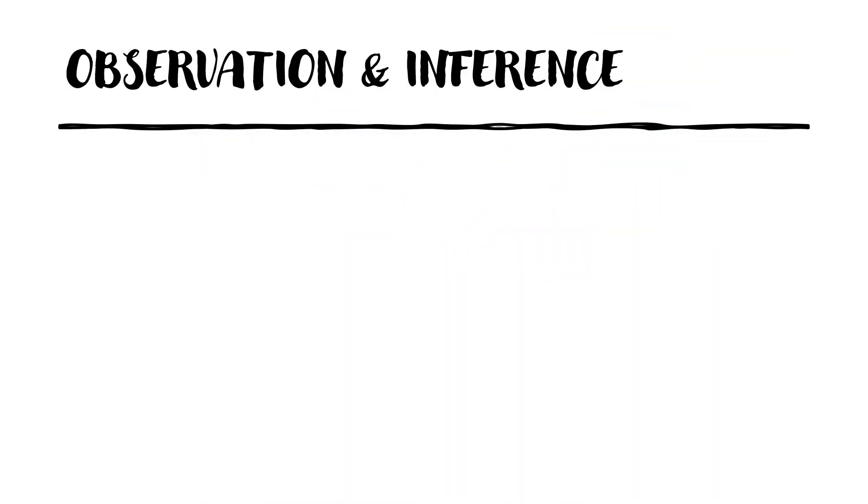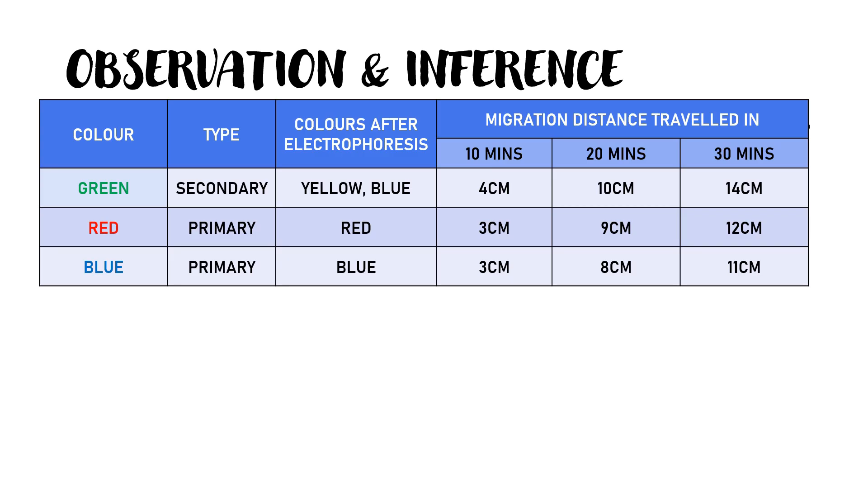For this experiment, the observation can include a table that specifies the color, the type, the colors after electrophoresis and the migration distance traveled in specific time intervals.